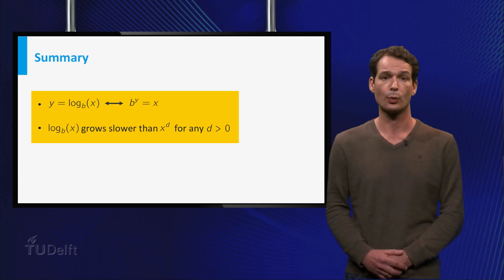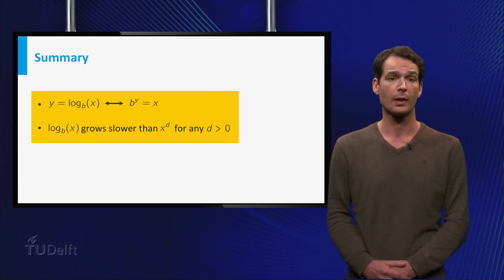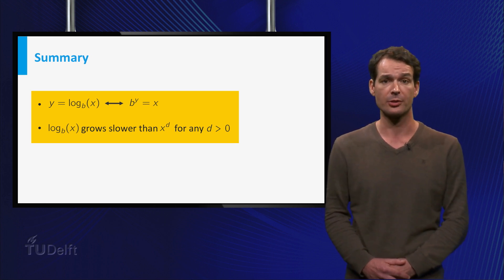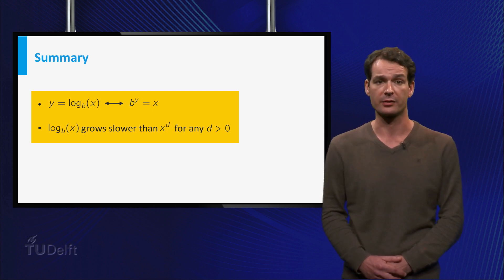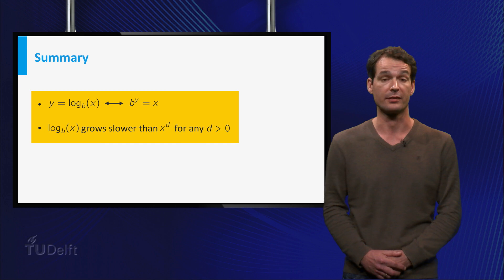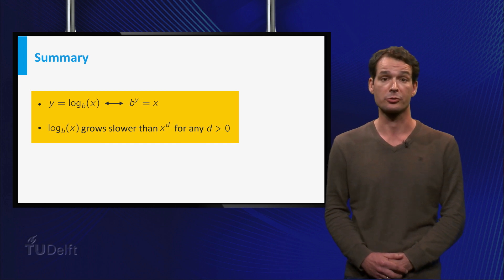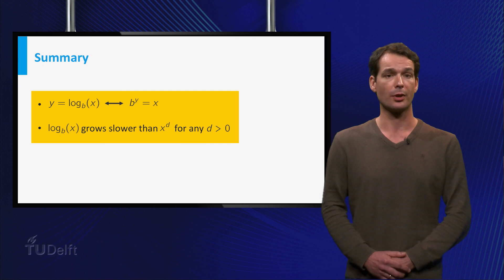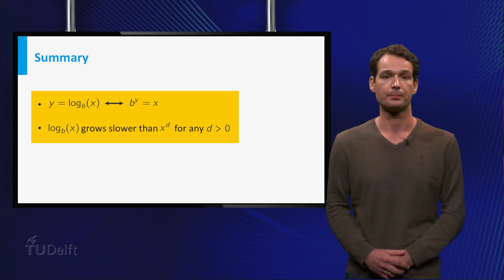Let's summarize what we know so far about logarithms. First, the logarithm in base b is the inverse of the exponential function b to the power x. And second, a logarithm grows slower than x to the power d for any positive number d.